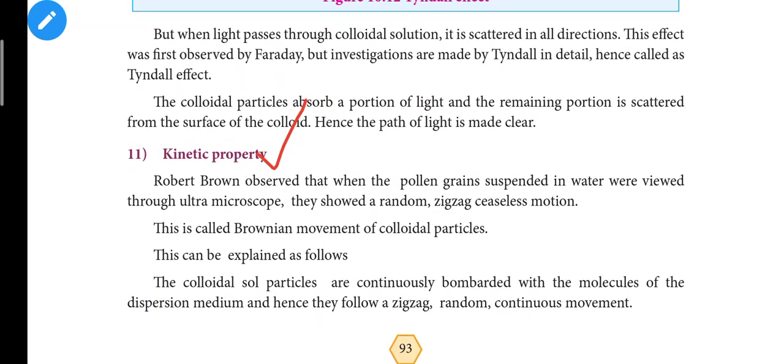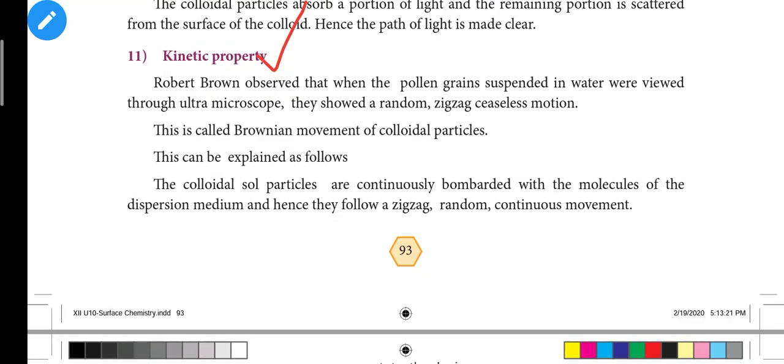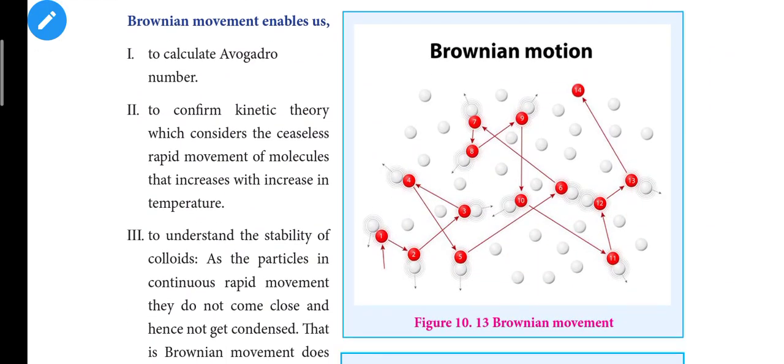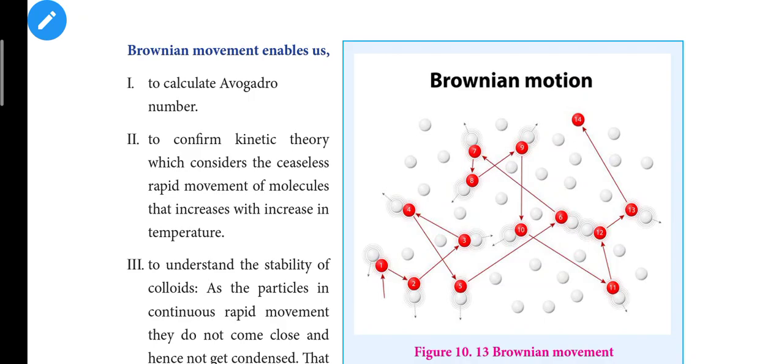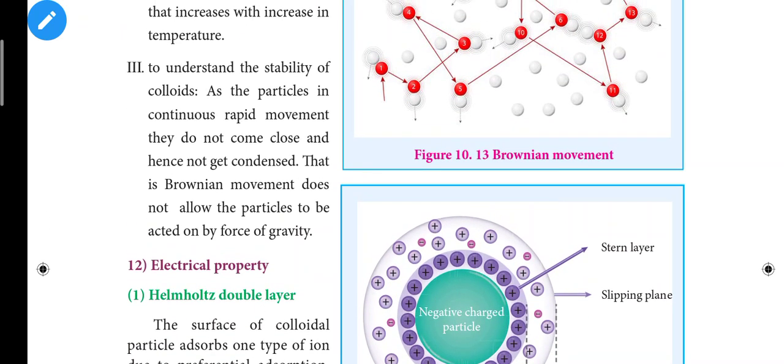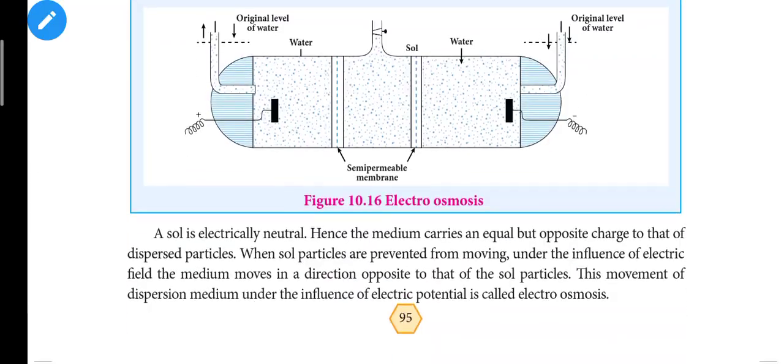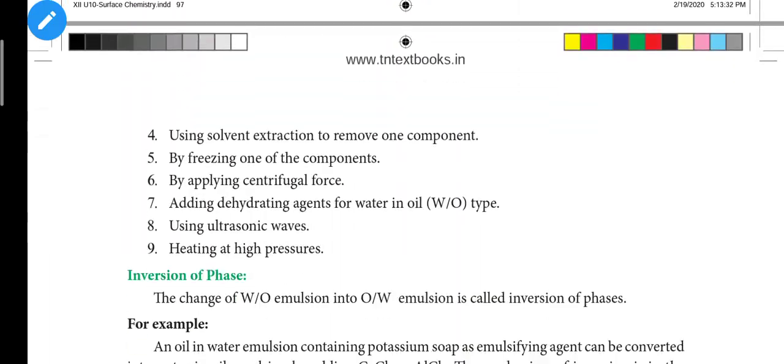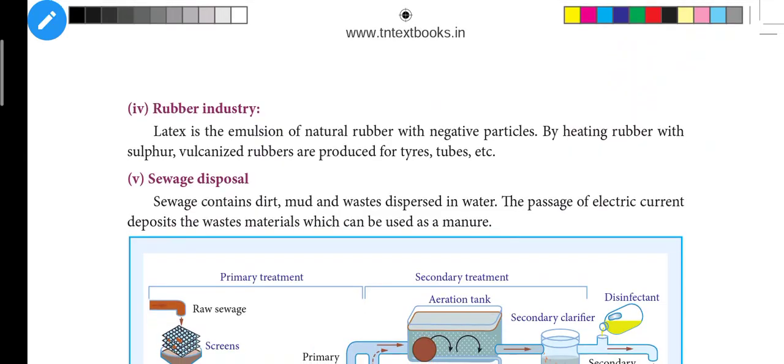Kinetic property is Brownian movement with zigzag motion. Brownian movement enables us to calculate Avogadro's number and confirm the kinetic theory which considers the ceaseless rapid movement of molecules that increases with increase in temperature. This is how it helps us understand molecular behavior.